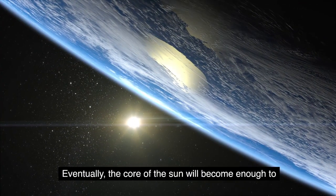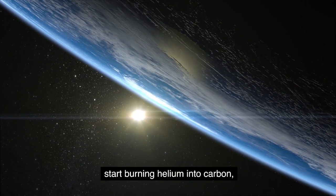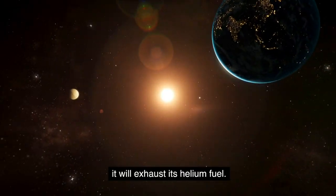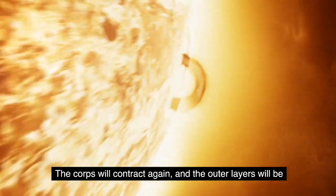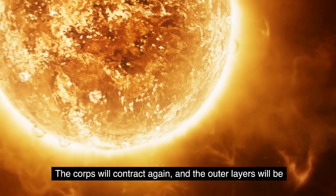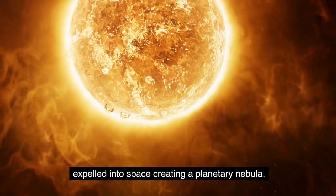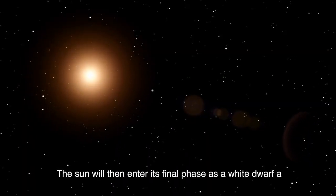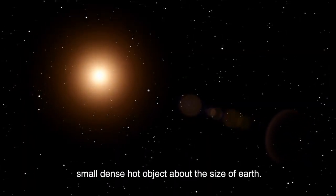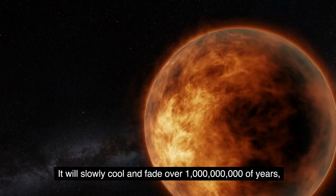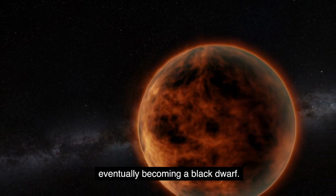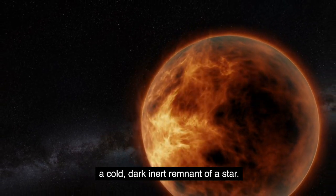Eventually, the core of the sun will become hot enough to start burning helium into carbon. But this phase won't last long. In about a billion years, it will exhaust its helium fuel. The core will contract again, and the outer layers will be expelled into space, creating a planetary nebula. The sun will then enter its final phase as a white dwarf, a small, dense, hot object about the size of Earth. It will slowly cool and fade over billions of years, eventually becoming a black dwarf, a cold, dark, inert remnant of a star.